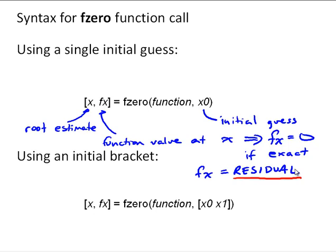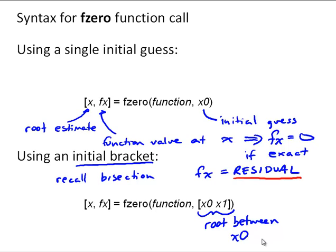A second way of calling the fzero function is with an initial bracket, similar to bisection. Now when we call it with an initial bracket, it's always going to search for a root between those two numbers, x0 and x1. And note this is a two element row vector, not two different inputs. In this case, this would be a single scalar initial guess. And in the first case, fzero is just going to converge on whichever root it lands on that's close to x0.